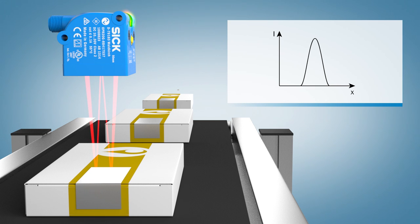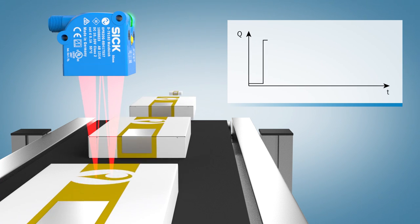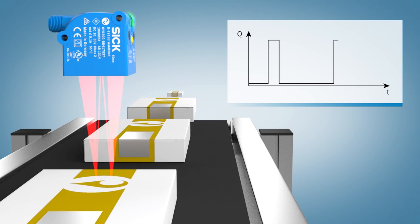Glossy objects reflect light at a defined angle. The glare sensor captures and evaluates this information and then transfers it to the machine controller.